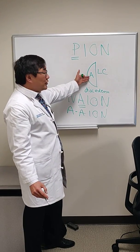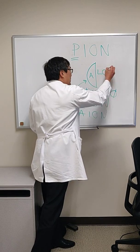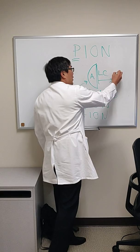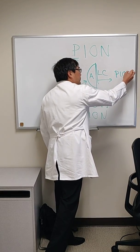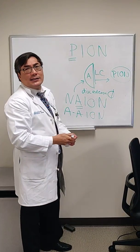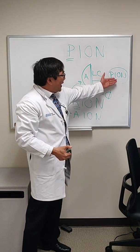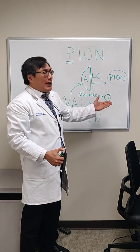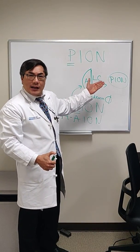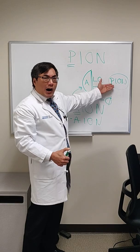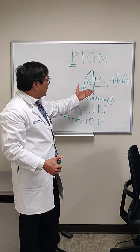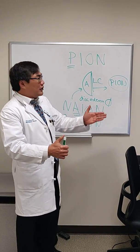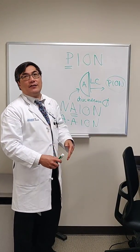In PION, there's no disc edema — because the problem is posterior to the Lamina Cribrosa. PION is a diagnosis of exclusion because you need to rule out other retrobulbar optic neuropathies, including retrobulbar optic neuritis, MS mimics like neuromyelitis optica, MOG (myelin oligodendrocyte glycoprotein), sarcoidosis — anything that could be affecting the optic nerve behind the Lamina Cribrosa.